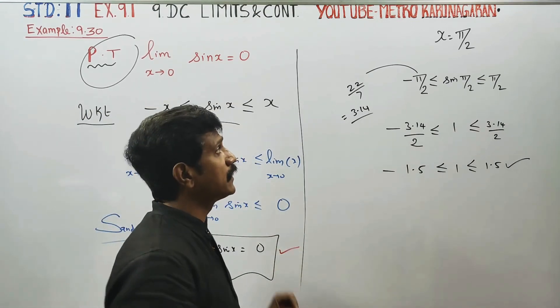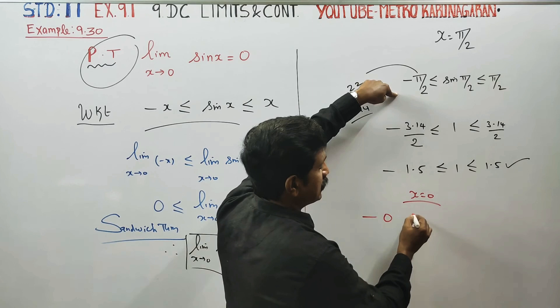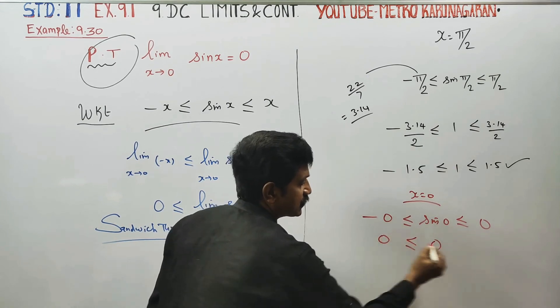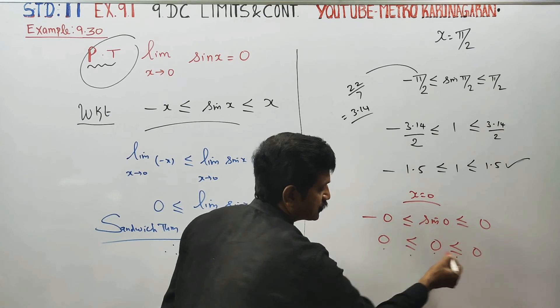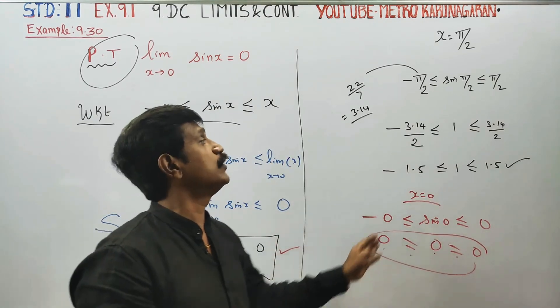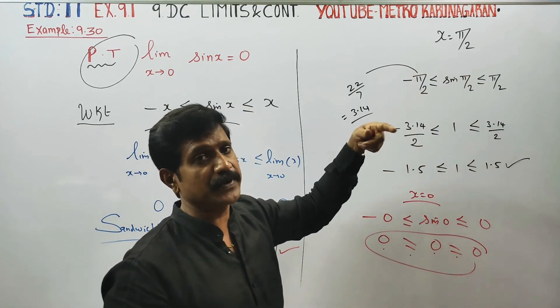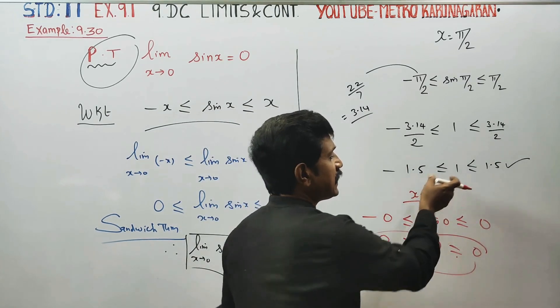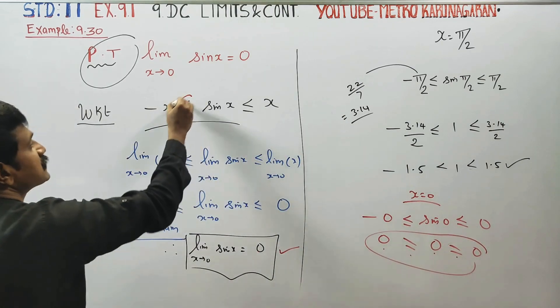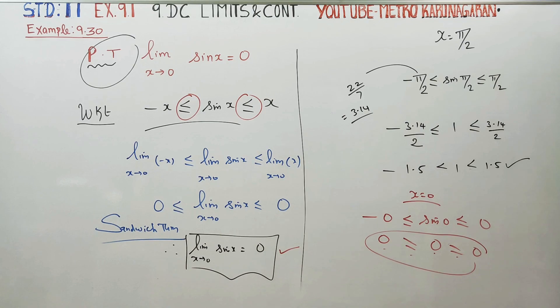Substituting to verify: minus 0 less than or equal to sin 0 less than or equal to 0. Sin 0 equals 0, so 0 less than or equal to 0 less than or equal to 0, which confirms sin 0 equals 0. Thank you.